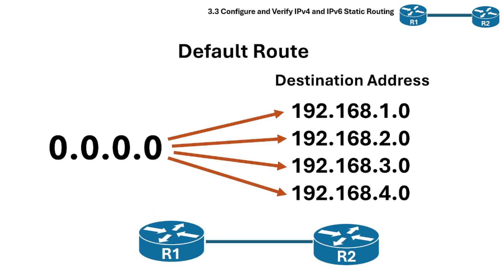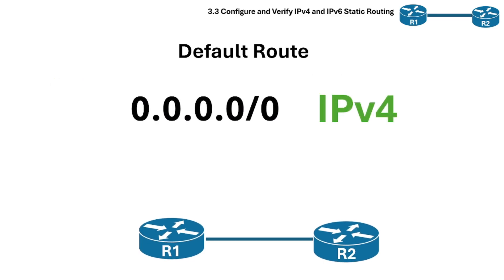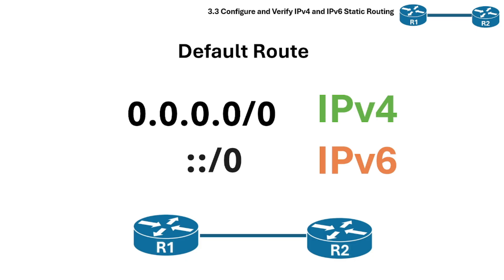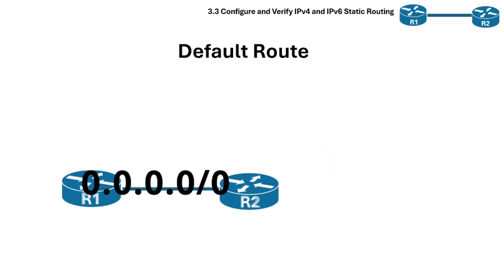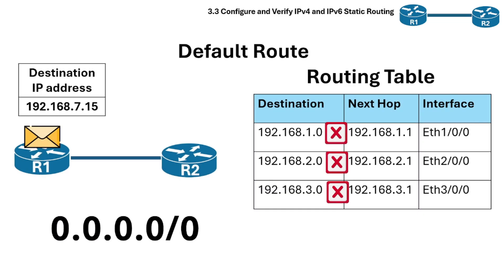Starting with the default route. This is a route that matches all destination addresses when no other more specific route exists in the routing table — often called the gateway of last resort. A static default route typically uses the IP address 0.0.0.0/0 for IPv4, or ::/0 for IPv6, as the destination network, representing all possible IP addresses. A default route acts as a fallback mechanism ensuring that packets destined for unknown networks are forwarded to a specific point for further processing.